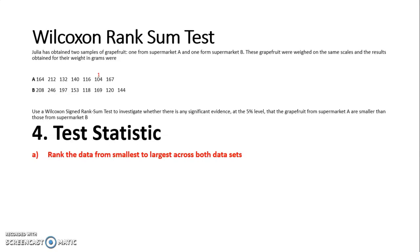Going through the rest of the data then, I will give a rank 2 to 116 and 118 and 120. Next up we have 132 on rank 5, 140 rank 6, 144 rank 7 and 153 rank 8. Then we have 164, 167, 169 and 197. And the last three is 208, 212 and 246. So we have now ranked all of our data as one, but we have kept it in Supermarket A and Supermarket B.